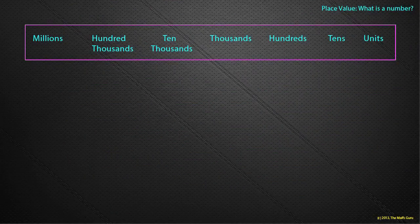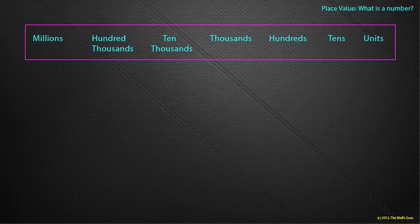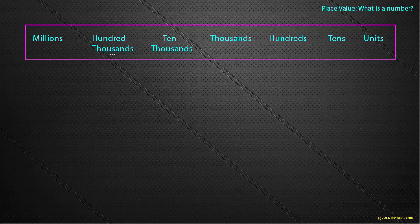So what is a number? We've learned previously that a number can be written in various columns. There's a millions column, 100,000, 10,000, thousands, hundreds, tens and units.